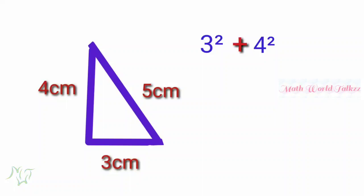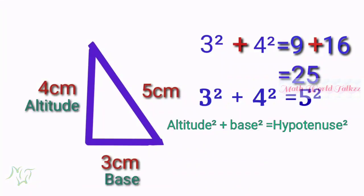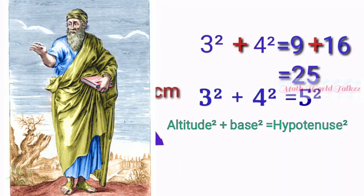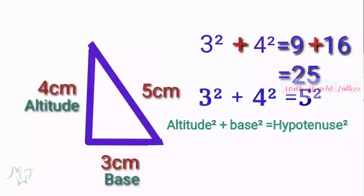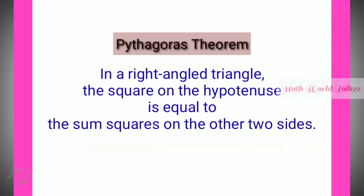If we add the squares: 3² is 9, plus 4² is 16, that equals 25. And 25 is the same as 5², which is the square of the hypotenuse. So altitude² + base² = hypotenuse². This is true for all right angle triangles. The Greek mathematician Pythagoras developed this relation.